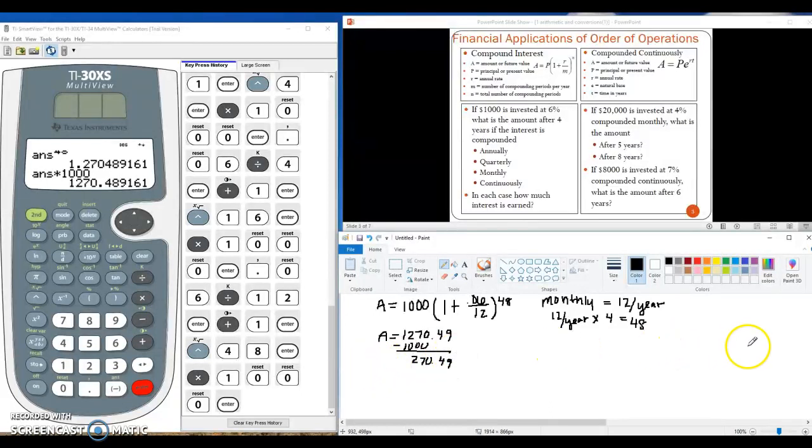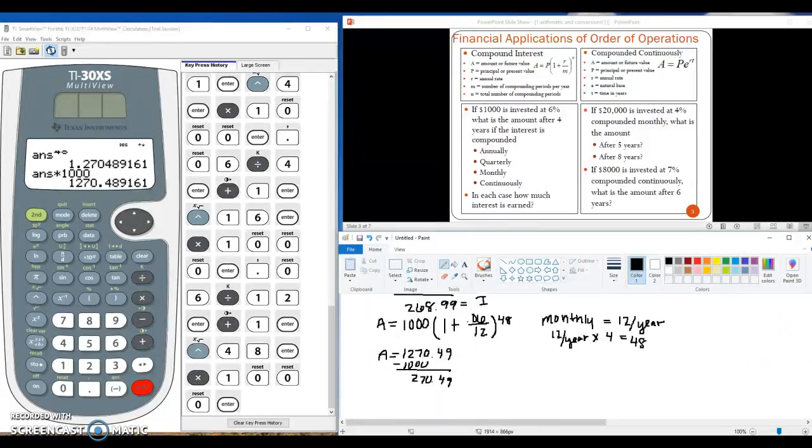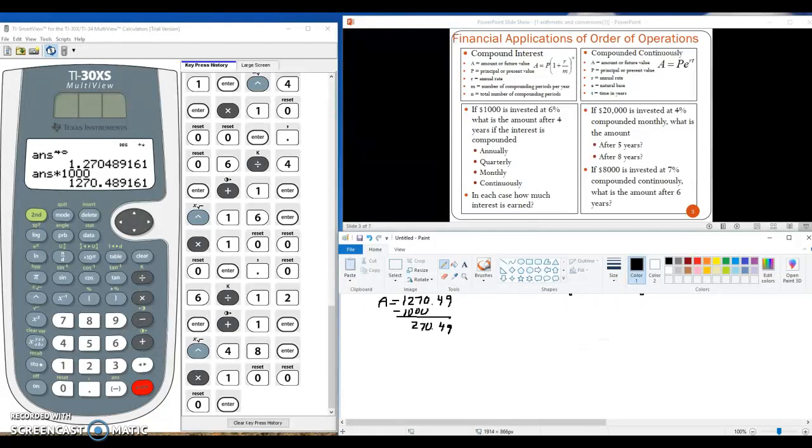So once again, comparing to quarterly, compounding monthly earns us just a little bit more interest. So the last piece of this is what if we would compound the interest continuously?